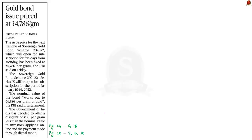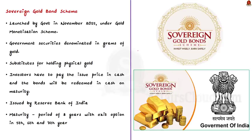This article says that the issue price for the next tranche of the Sovereign Gold Bond Scheme 2021-22 has been fixed by the RBI at Rs. 4,786 per gram, and the Government of India has decided to offer a discount of Rs. 50 per gram to investors applying online and paying through digital mode. With this as a context, let us understand the Sovereign Gold Bond Scheme. The scheme was launched by the government in November 2015 under the Gold Monetization Scheme.